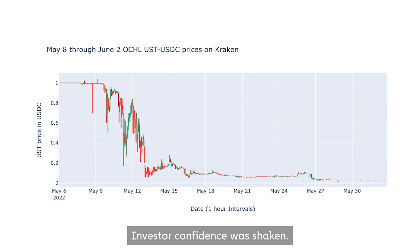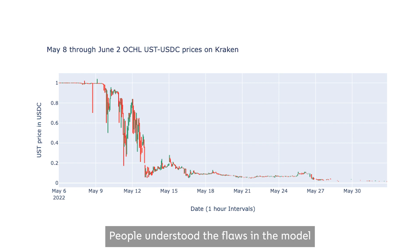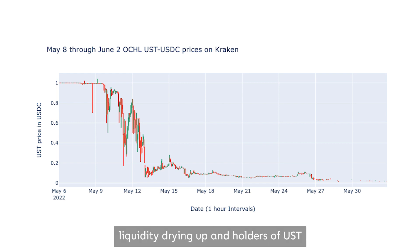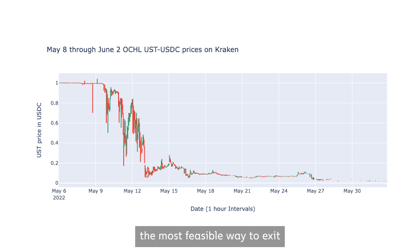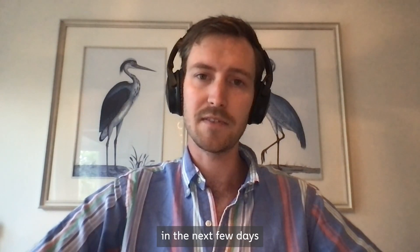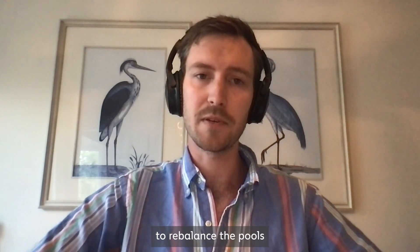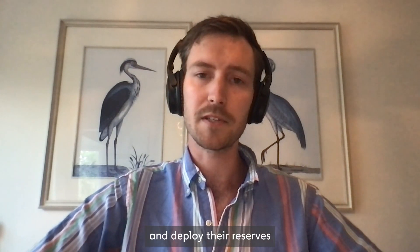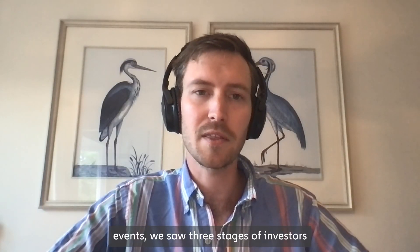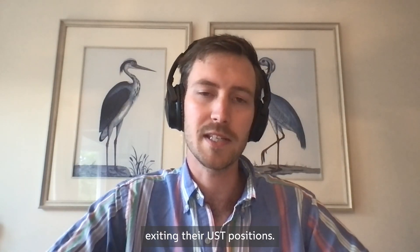Investor confidence was shaken. People understood the flaws in the model and saw the liquidity doors closing. With the on-chain liquidity drying up and holders of UST losing confidence in the peg, the most feasible way to exit the system was redeeming UST for LUNA. Investors ran for the exits in the next few days, in spite of attempts from the LUNA Foundation to rebalance the pools and deploy their reserves to defend the peg. To summarize the price events, we saw three stages of investors exiting their UST positions.